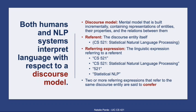Referring expressions are the actual linguistic realizations that correspond to a given referent. So if we're considering a discourse entity representing CS521 — the graduate-level continuation of this course — we could use referring expressions like CS521 or CS521 natural language processing, and so forth. In each of those cases, we'd be referring to the same referent.